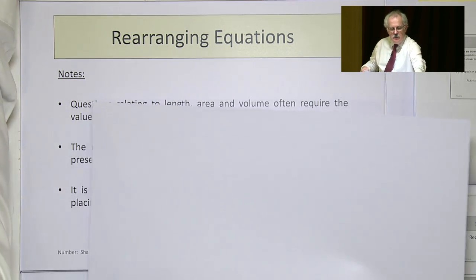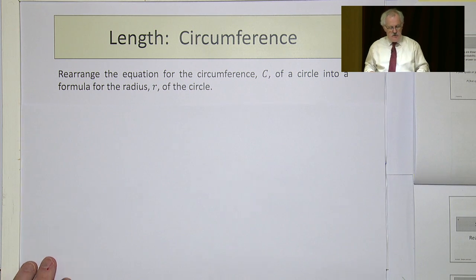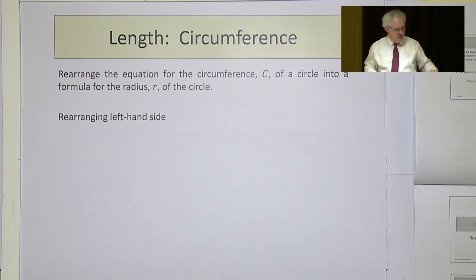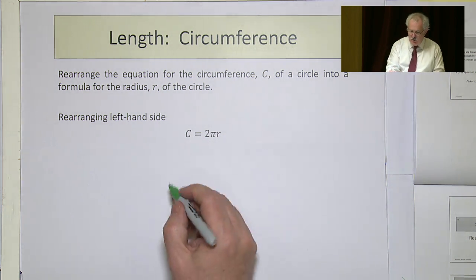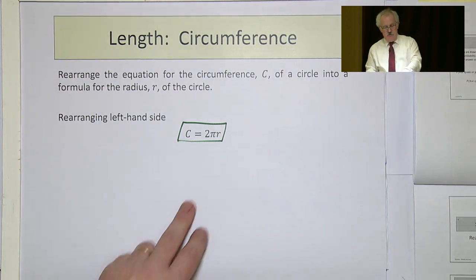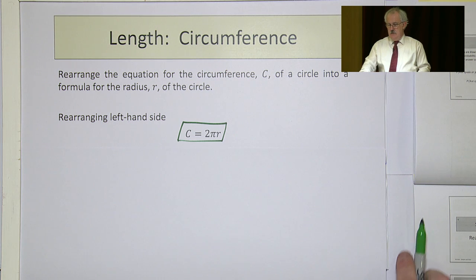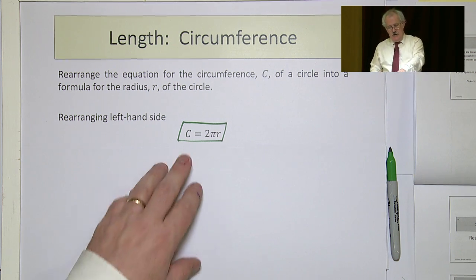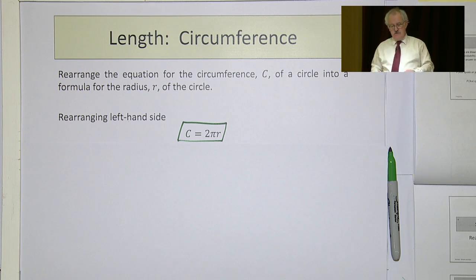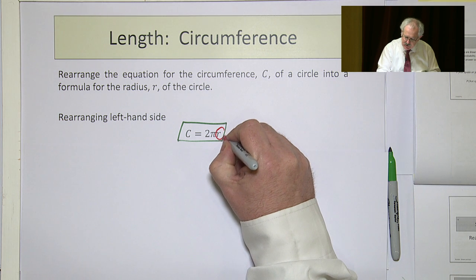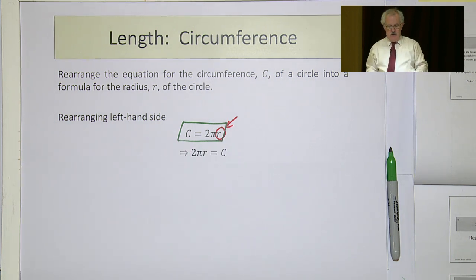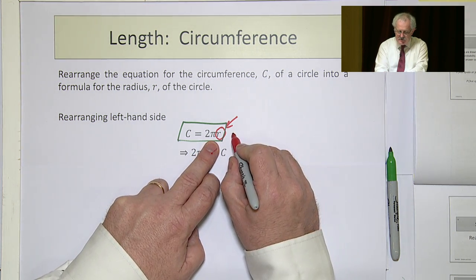We start with a question on circumference: rearrange the equation for the circumference C of a circle into the formula for the radius of the circle. You look up your table and you're told that C is 2πr. That might be fine, but it's unlikely they'll say the radius is 10, find the circumference — they're more likely to say the circumference of a circle is given, find the radius. So we refocus our attention on the variable r and we want that to be on the left hand side.